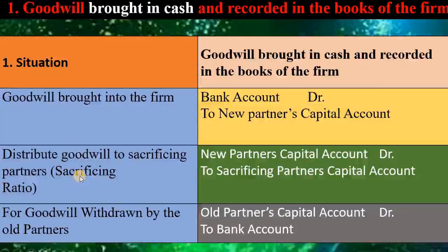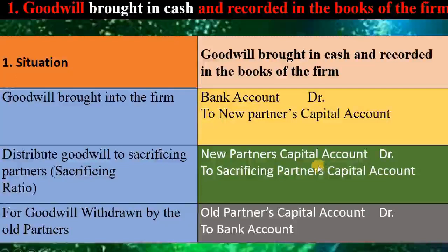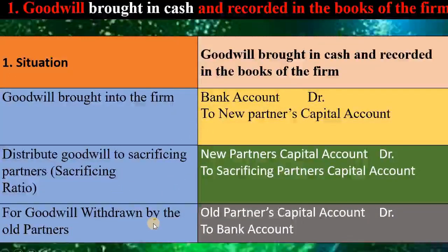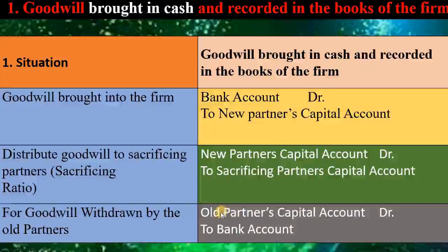After the goodwill is brought into the firm, we have to distribute the goodwill to the sacrificing partners. So for that reason, new partner's capital account debits to sacrificing partner's capital account — goodwill received by the new partner, goodwill sacrificed by the old partners: debit the receiver, credit the giver. The third transaction: if goodwill is withdrawn by the old partners, cash goes out from the firm, so bank account credit, and the old partners gain the cash amount. Debit the receiver — old partners receive the amount — so their capital account debit. Old partners capital account debit to bank account.